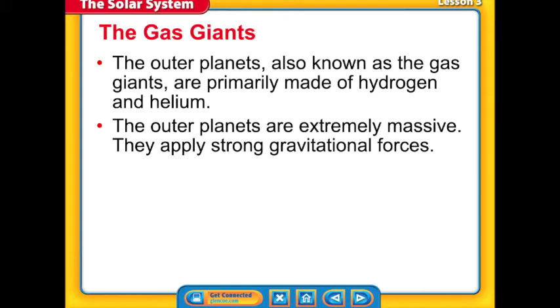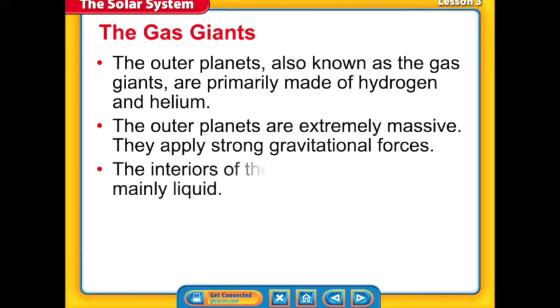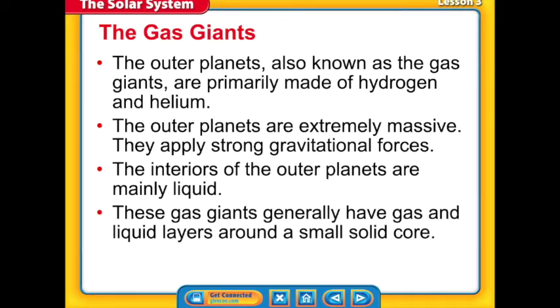The outer planets are extremely massive, so your second note: the gravitational force is very strong. And then the third note is the structure. The interior of the outer planets are mainly liquid. The gas giants have gas and liquid layers around a small solid core. So write down thick gas and liquid layers covering a small solid core.